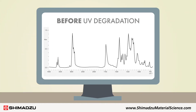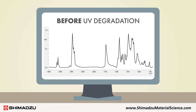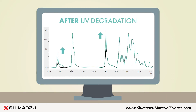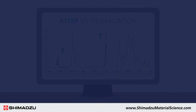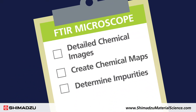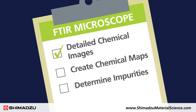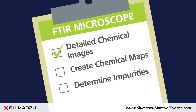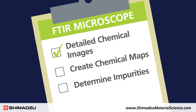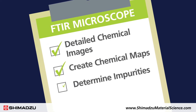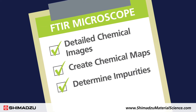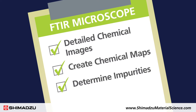FTIR is also used in weathering tests to determine the effects of heat and ultraviolet light on plastic matrix materials. FTIR microscopes can be used to obtain detailed chemical images over extremely small areas, create chemical maps, and determine impurities during failure analysis.